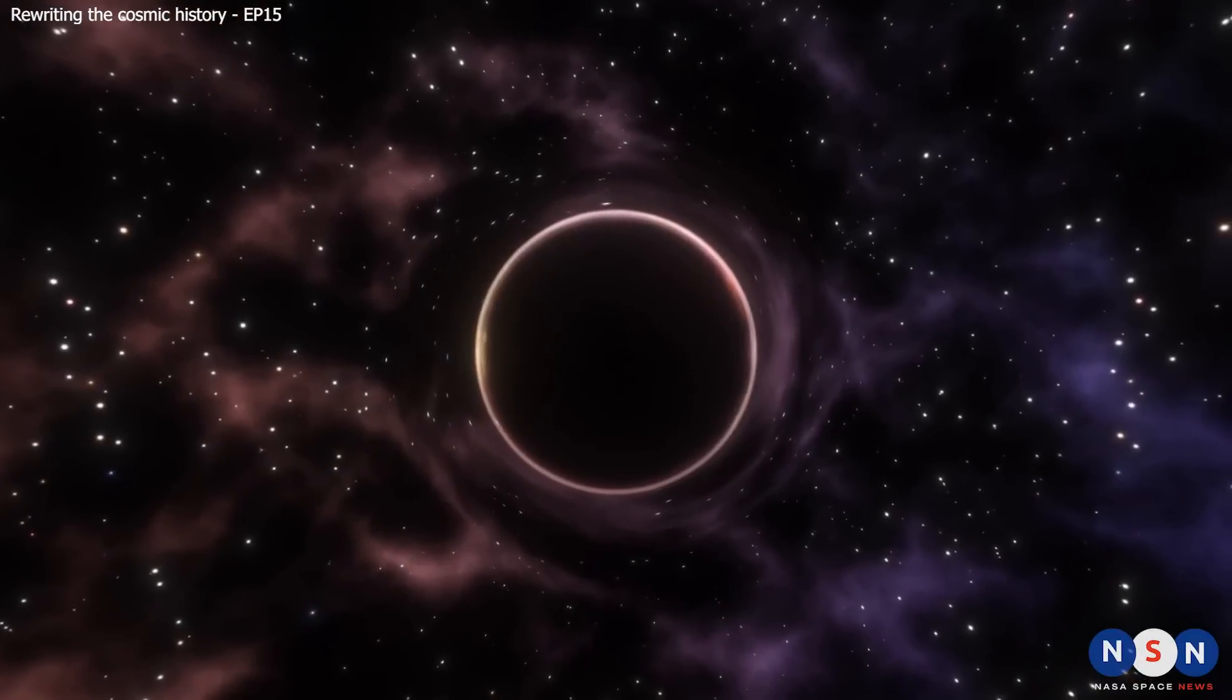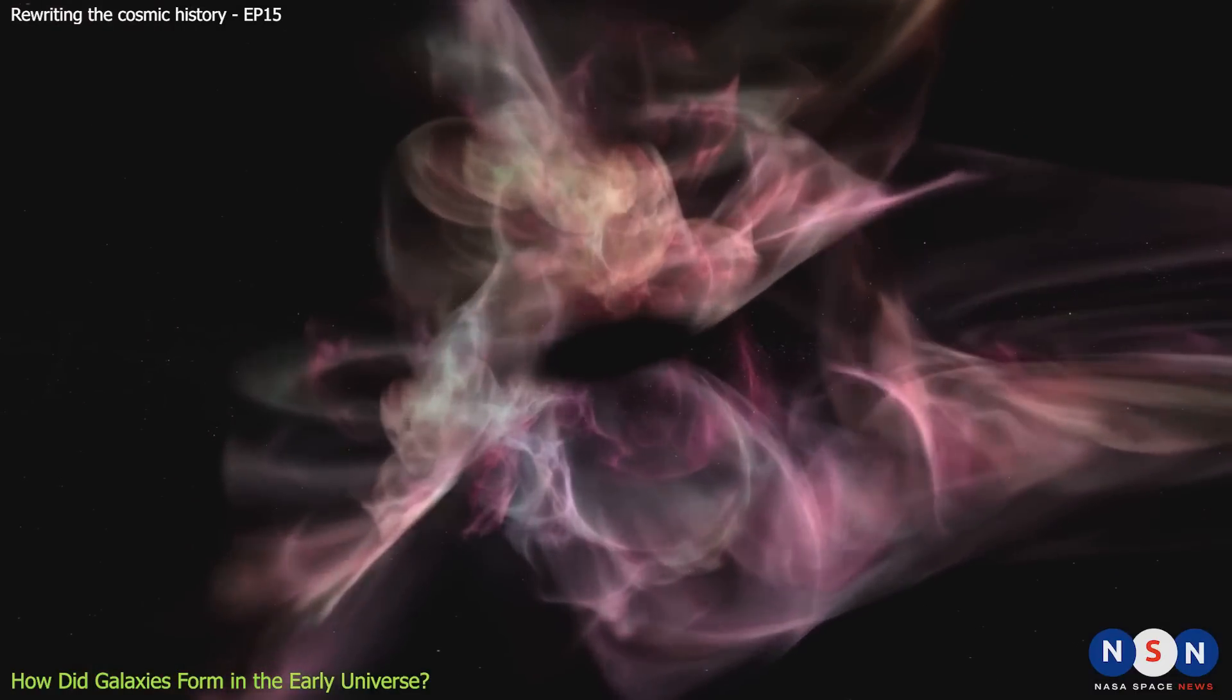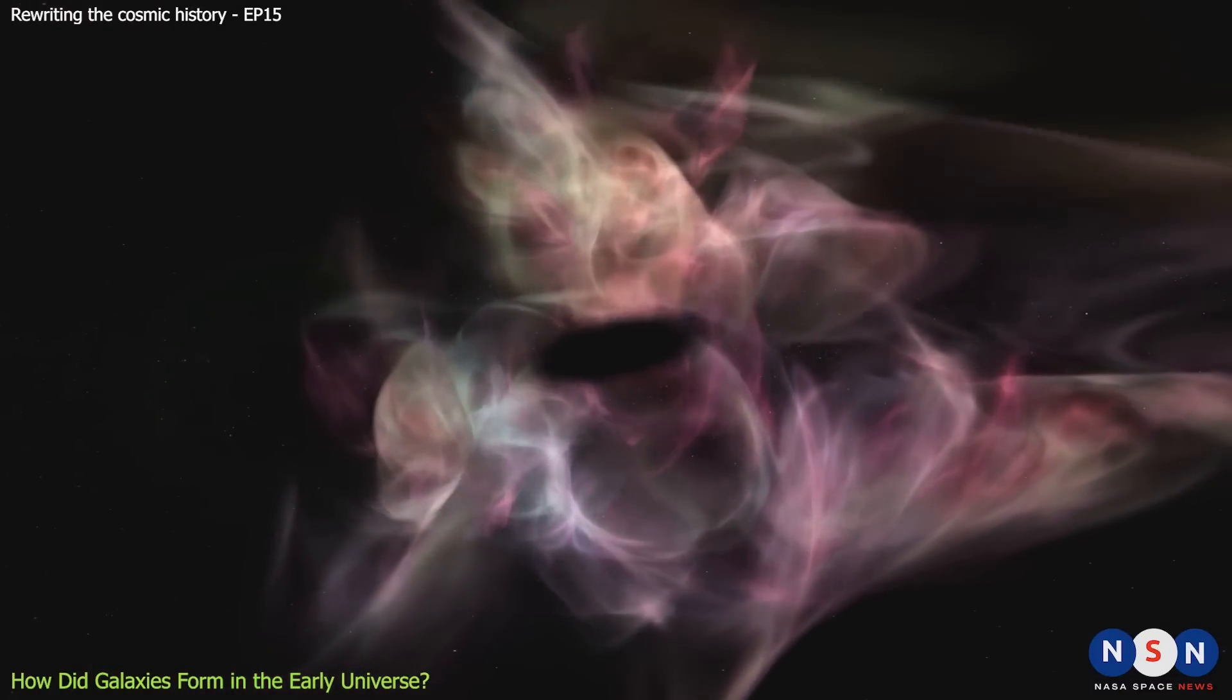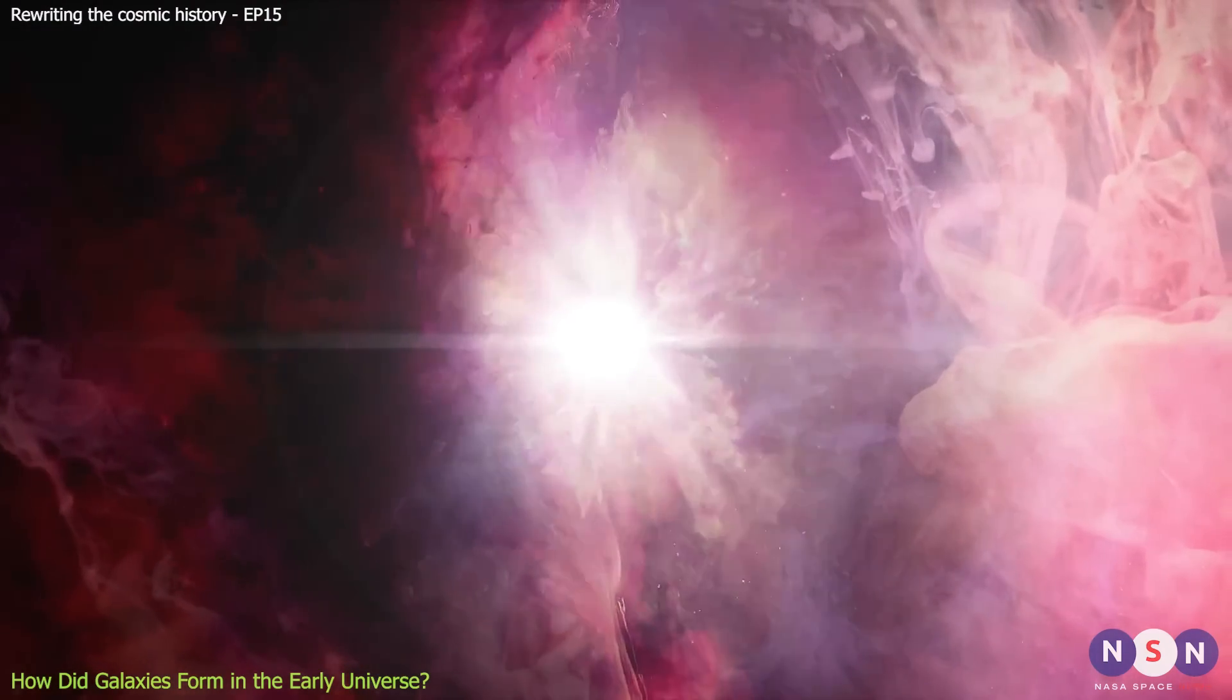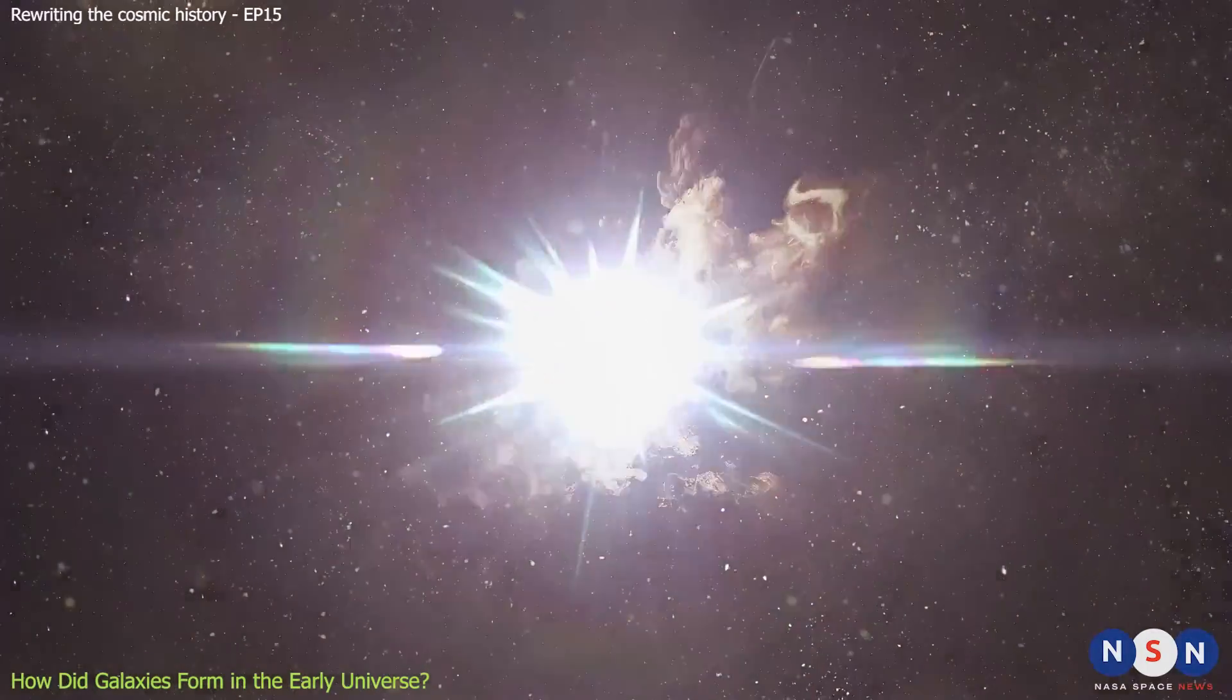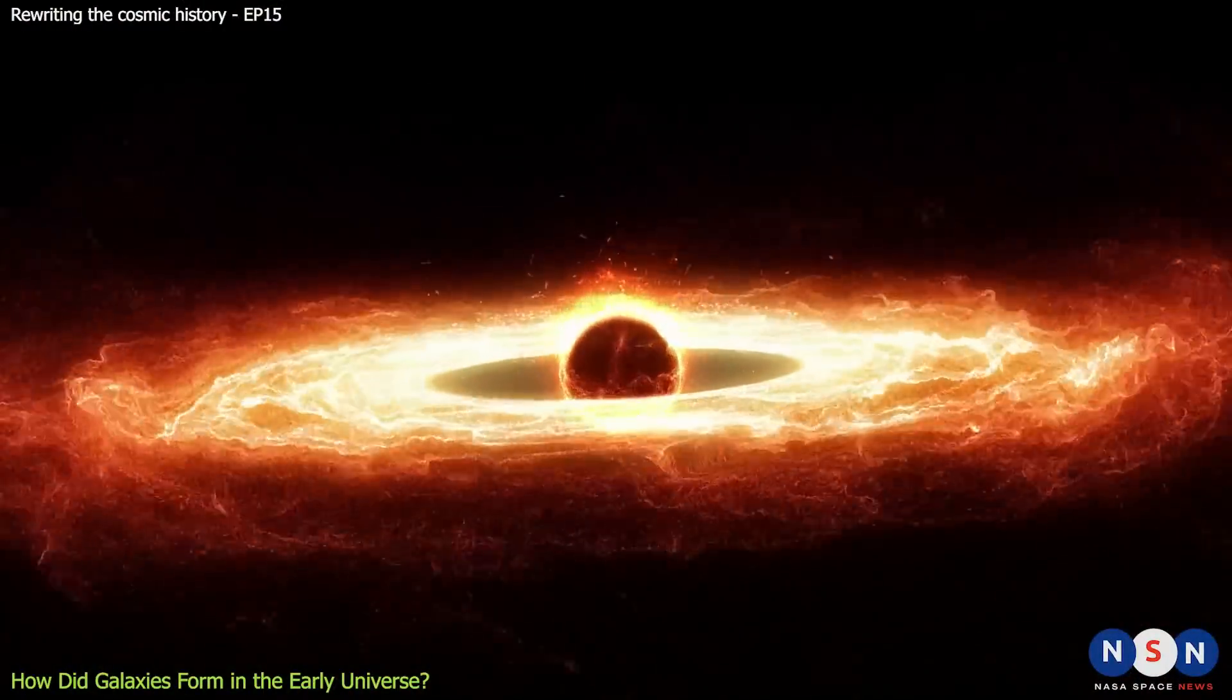Black holes are some of the most mysterious and fascinating objects in the universe. They are regions of space where gravity is so strong that nothing, not even light, can escape. They can form when massive stars collapse at the end of their lives or when two smaller black holes merge together. But how did the first black holes form?